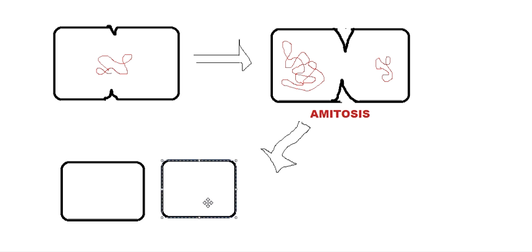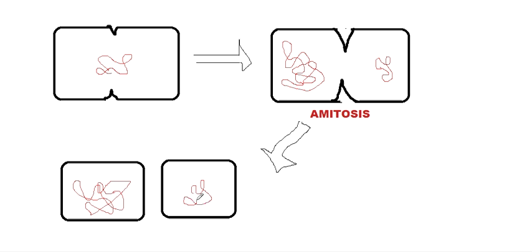Now we have our two cells — one with a large amount of genetic material and one with a small amount of genetic material. The bacteria doesn't care if the genetic material is small or large, because bacteria doesn't have such important requirements that genetic material must be divided equally for survival.